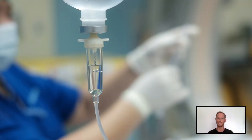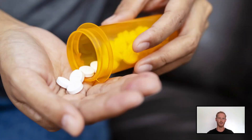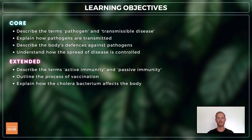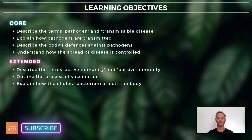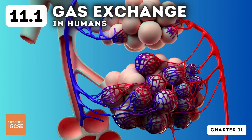Treatment of cholera involves intravenous rehydration and replacement of salts, and the use of an antibiotic to kill the bacteria. Well done — you've just covered absolutely everything you need to know on topic 10.1, diseases and immunity. If you enjoyed this video, I'd really appreciate your subscription, and I'll see you next time for topic 11.1, gas exchange in humans.